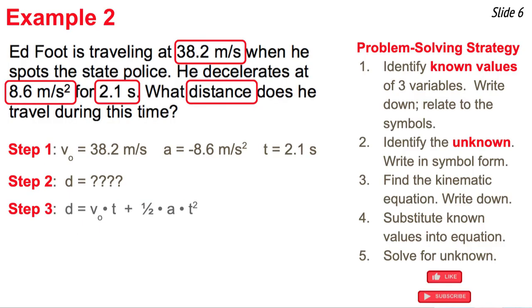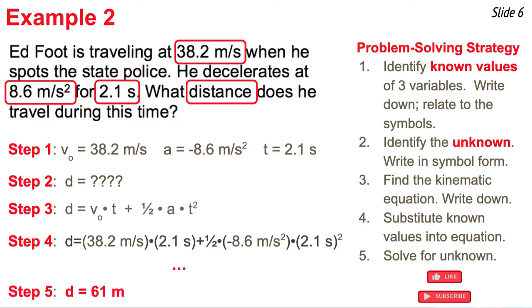I'm going to write this equation down, and then step four, I'm going to substitute these three known values into it, and then I'm going to perform some algebra and calculations to solve for the unknown. The algebra here is rather simple. I'm just going to multiply and add two terms together. And when I'm done, I get 61 meters as the distance traveled during this 2.1 second of time.